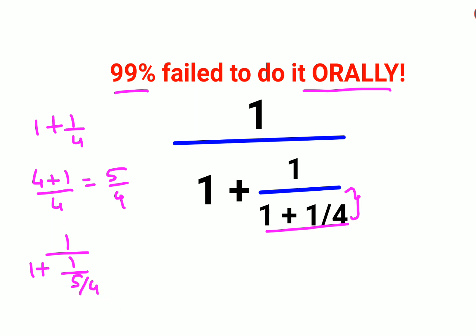Whenever you have 1 upon any number, that means you are just taking the reciprocal. So this can be written as 1 upon 1 plus reciprocal of 5 upon 4 is 4 upon 5.